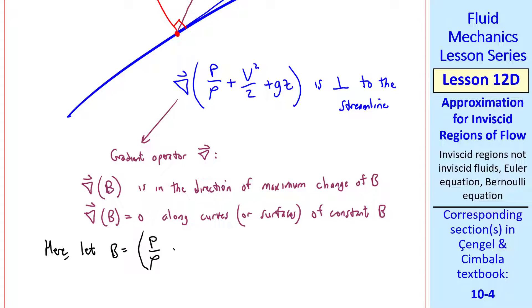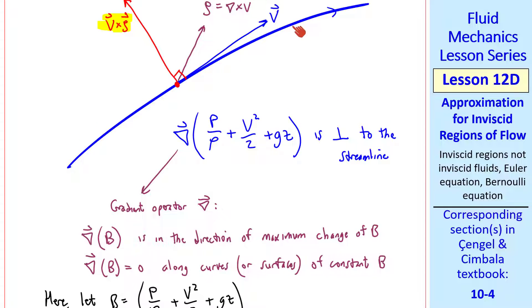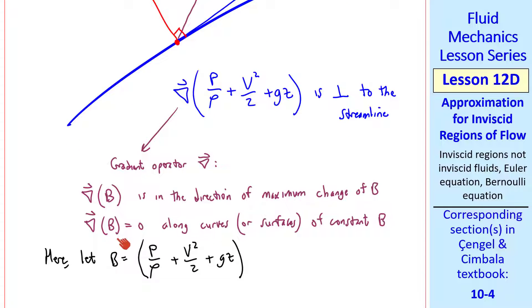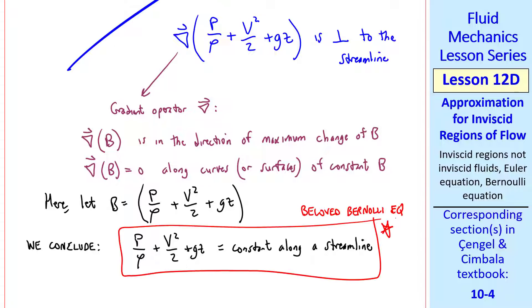Here let's let b equal what's in the parentheses in the above equation. And since that quantity is perpendicular to streamlines, the gradient of the quantity has to equal zero along the streamline. We conclude that the quantity in parentheses, p over rho plus v squared over 2 plus gz, is constant along a streamline. This is the beloved Bernoulli equation. We've seen this before, and we've derived it now three different ways. We showed that it's a degenerate form of the energy equation. We derived it by using the linear momentum equation. And now we've derived it by using the Euler equation. All three derivations give the same beloved Bernoulli equation.